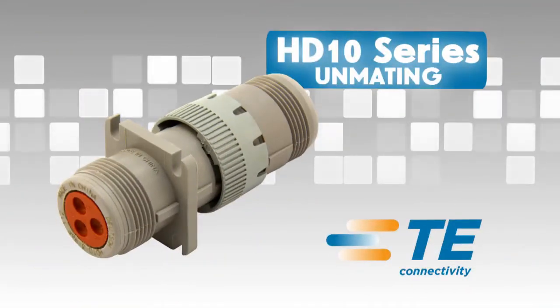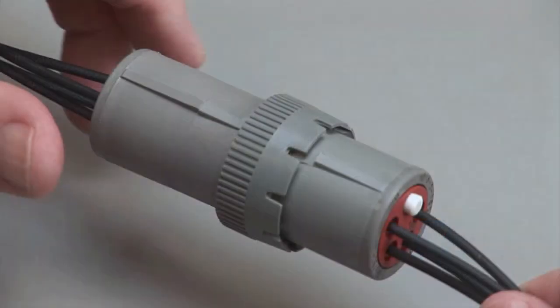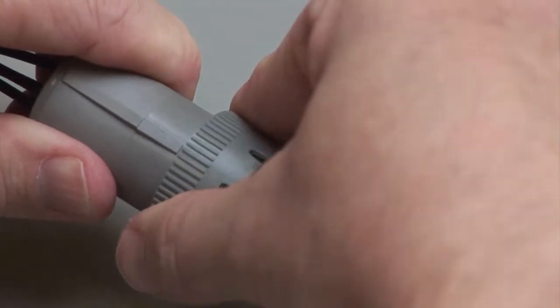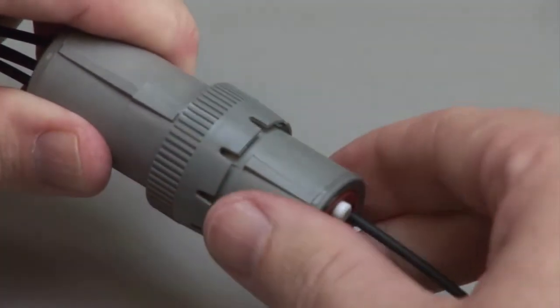HD 10 unmating. To unmate HD 10 series connectors, grasp the coupling ring on the plug and twist one quarter turn until it unmates from the receptacle.